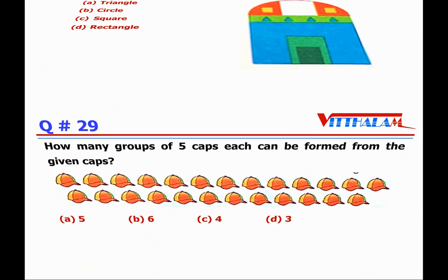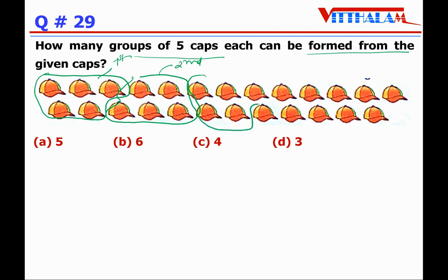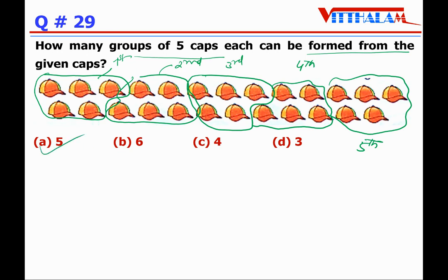Next, Question 29: how many groups of 5 caps each can be formed from the given caps? Let's make groups of five: 1, 2, 3, 4, 5 — first group. Then second group, third group, fourth group, and fifth group. That means we can make five groups of five caps. So the answer is five, which means option A.